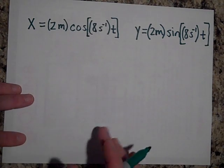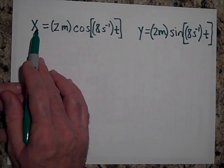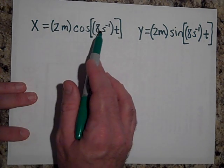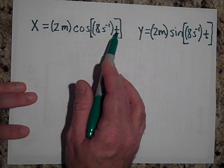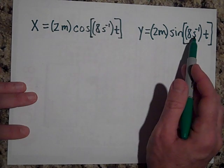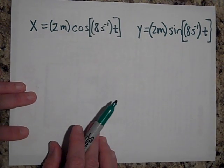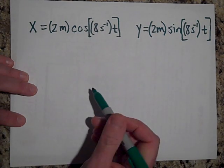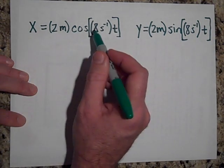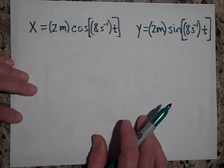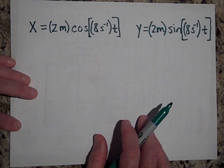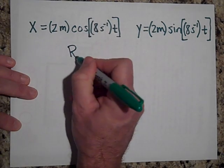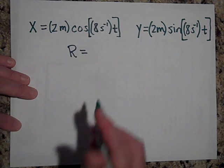For this next problem, the position vector has x = 2 meters·cos(8 s⁻¹ · t) and y = 2 meters·sin(8 s⁻¹ · t). First, what type of motion does this describe? It describes circular motion — this is the x-component and this is the y-component. If you graphed this it would make a perfect circle, uniform circular motion at constant speed. The radius of this motion would be 2 meters.